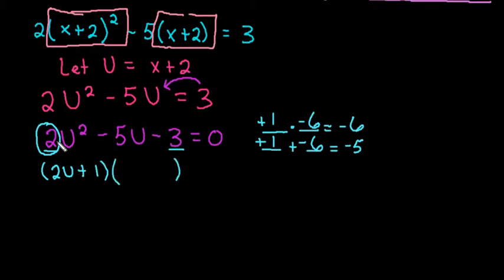For the second parenthesis, since 2 and negative 6 have a 2 in common, I'm going to go ahead and take the 2 out. So I'm going to do 2 divided by 2, which is just 1. And negative 6 divided by 2, which is negative 3.